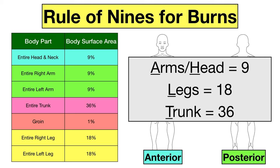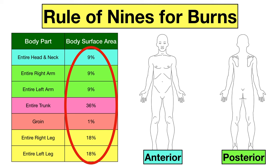The easy way to remember this is to go in alphabetical order. First we have A and H for arms and head, which are each 9%. Next we have L for legs, which has a higher body surface area of 18%. Finally we have T for trunk, which has an even higher body surface area of 36%. You can see how the percentages are multiples of nine — with the exception of the groin — which is why the rule gets its name.